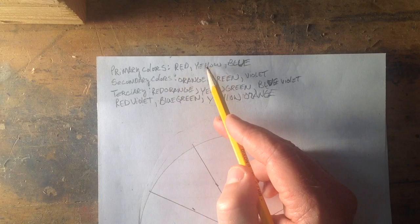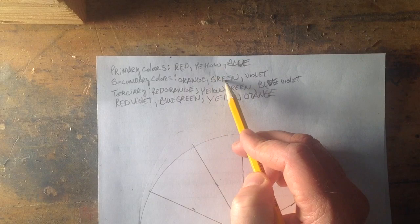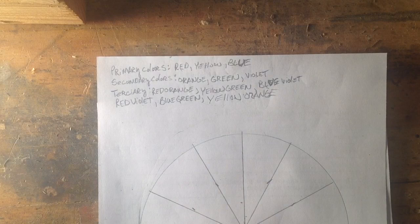Secondary colors are mixes of two primaries. So when you mix red and yellow together you're going to get orange, blue and yellow together you're going to get green, and blue and red you're going to get violet.